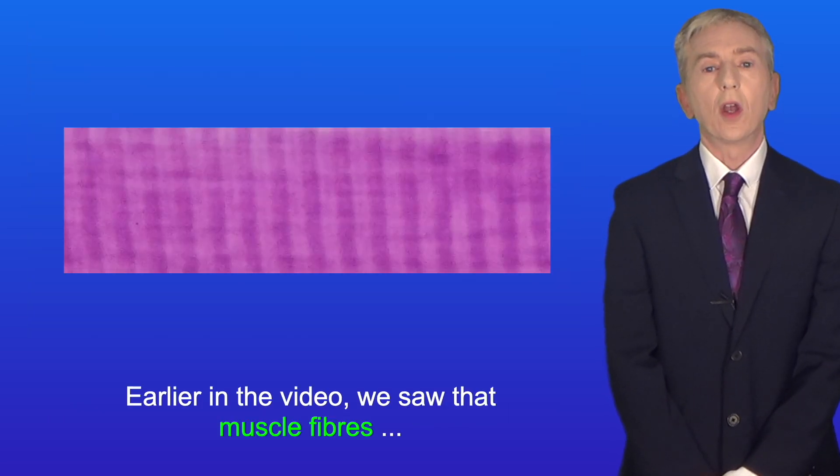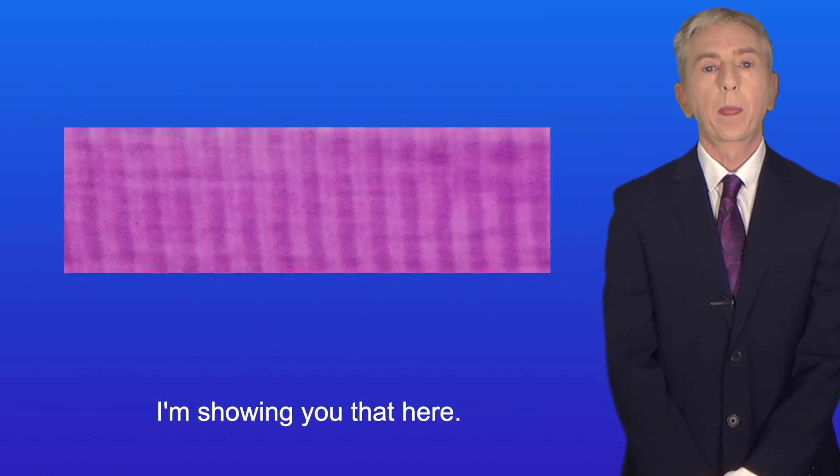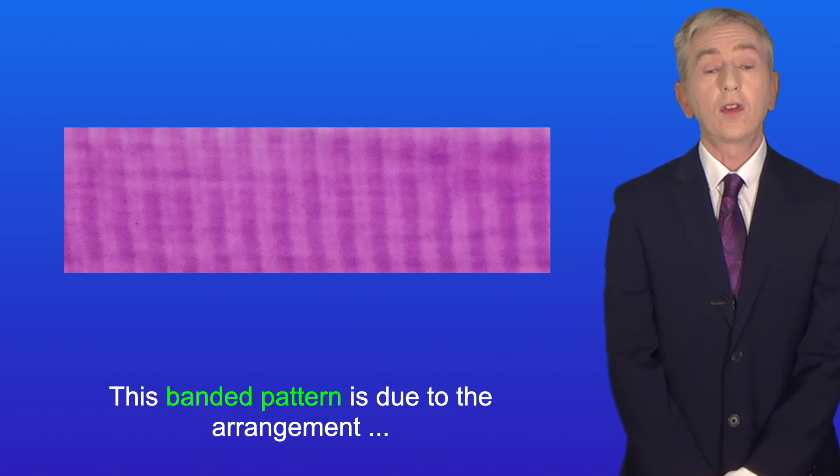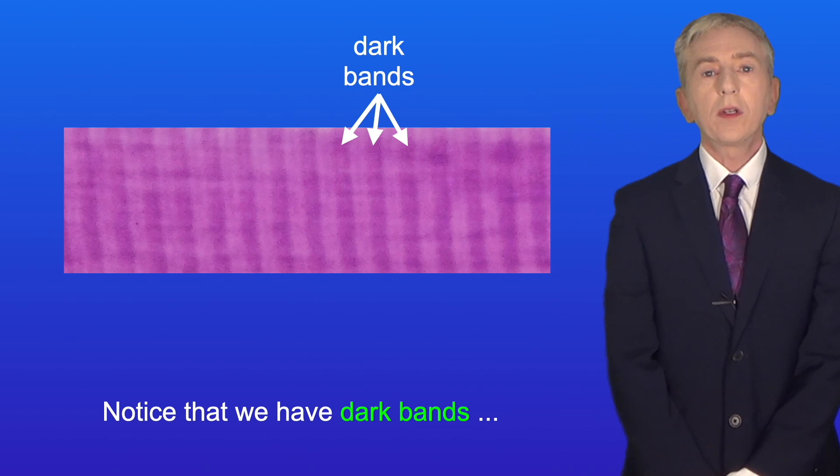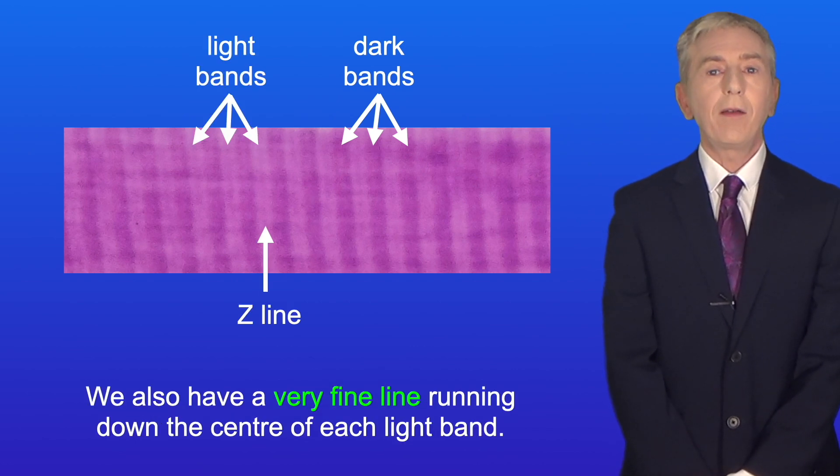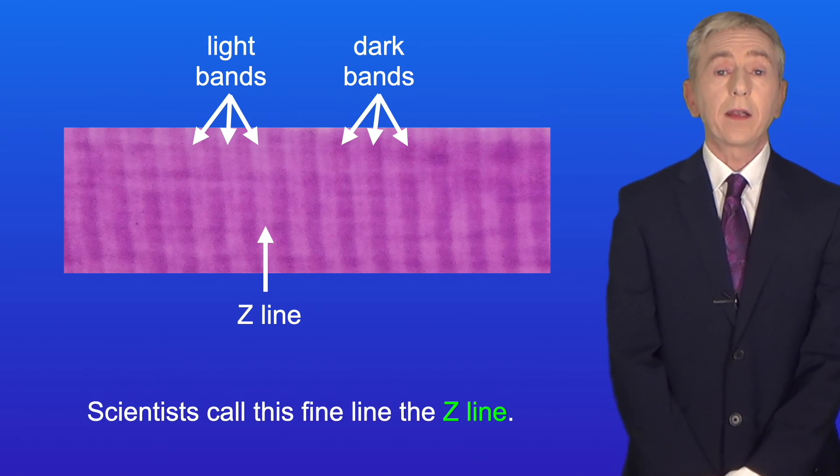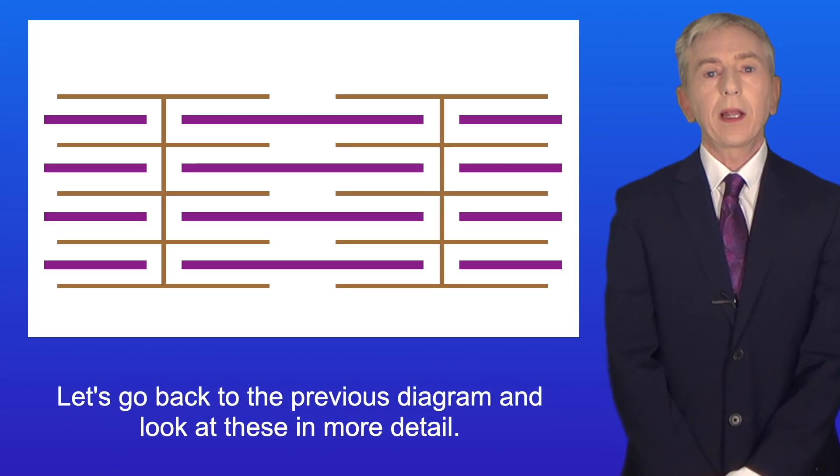Now earlier in the video we saw that muscle fibers have a striped or banded appearance and I'm showing you that here. This banded pattern is due to the arrangement of thick and thin protein filaments. Notice that we have dark bands and we have light bands. We also have a very fine line running down the center of each light band. Scientists call this fine line the Z line. So let's go back to the previous diagram and look at these in more detail.